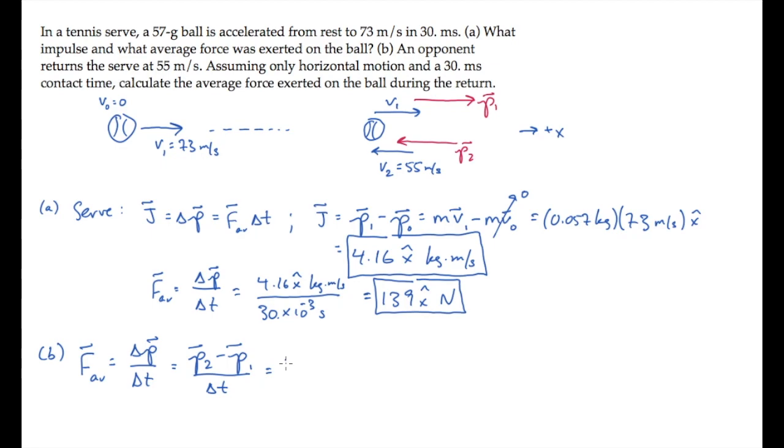Substitute mass times velocity for each of the momentum expressions. Factor the mass out and substitute the known values. V2 is negative 55 x hat meters per second.